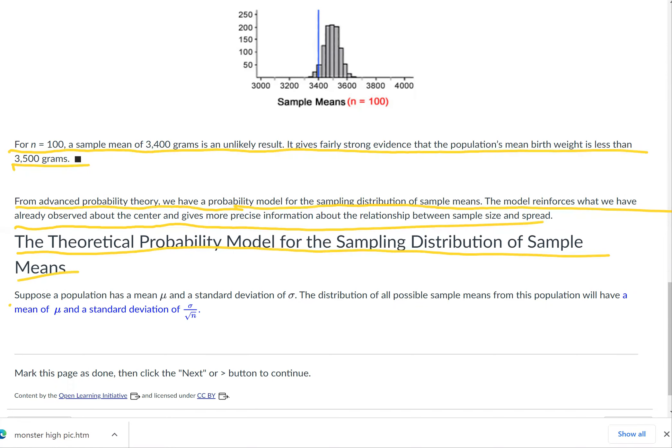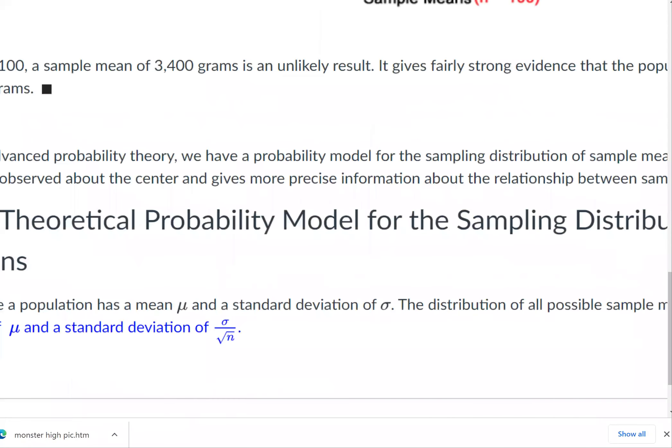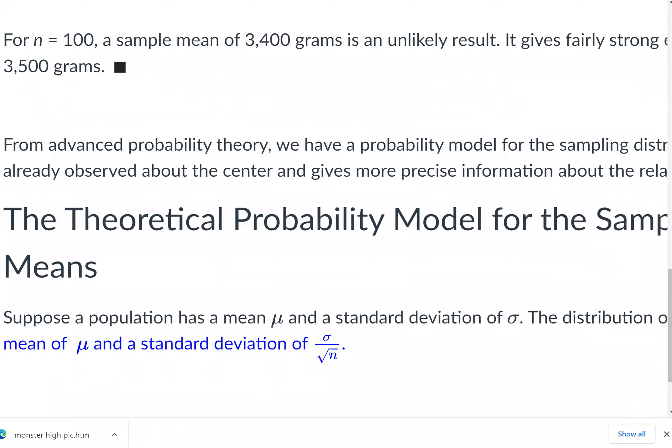Suppose a population has a mean μ and a standard deviation of σ. The distribution of all possible sample means from this population will have a mean μ, like we saw in those histograms above. No matter what n is, the sample size, the mean is always that certain thing that we saw. The standard deviation will change because we saw the spread change as we increased the value of n. So μ doesn't change.